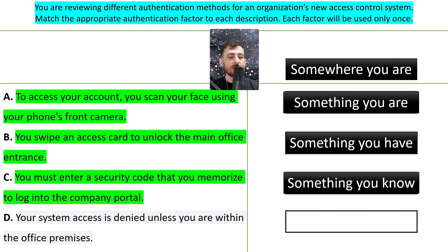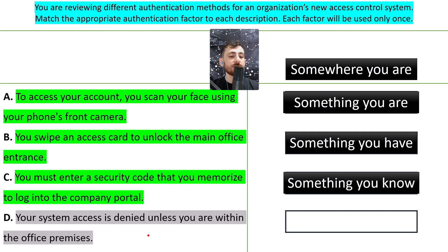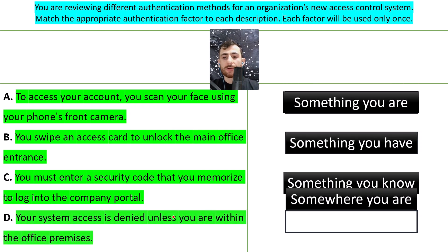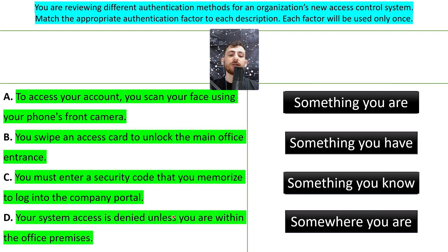And the last one, D: Your system access is denied unless you are within the office premises. That's somewhere you are — you need to be within the office premises in order to access the system.